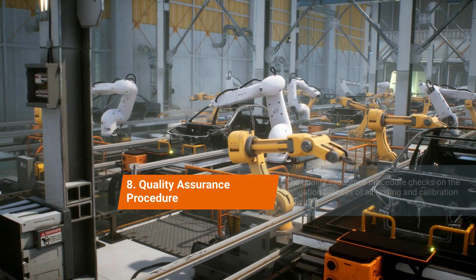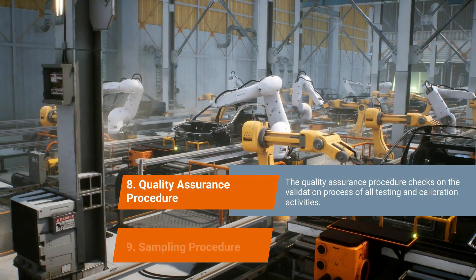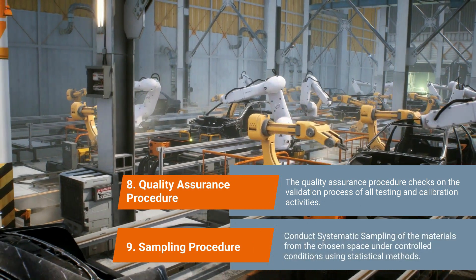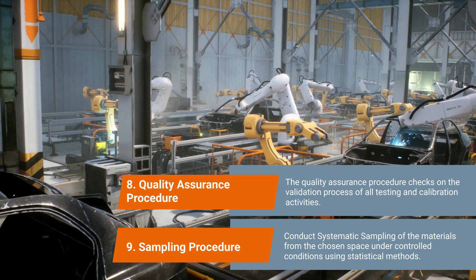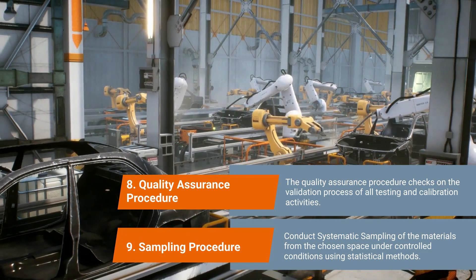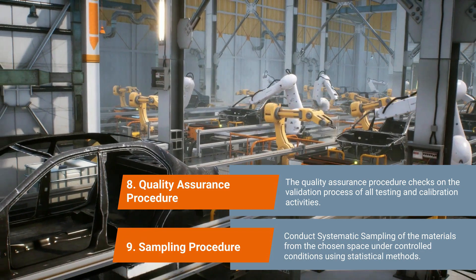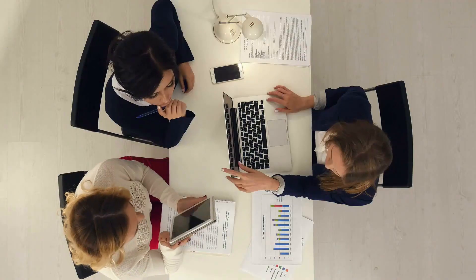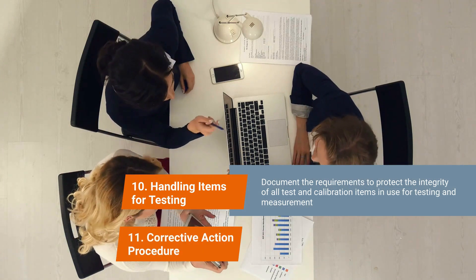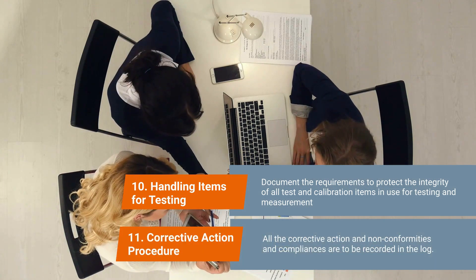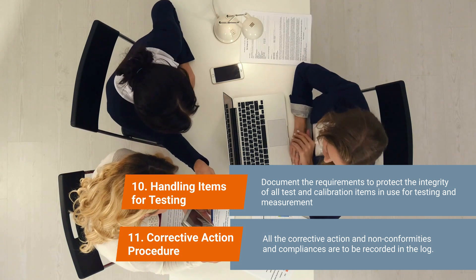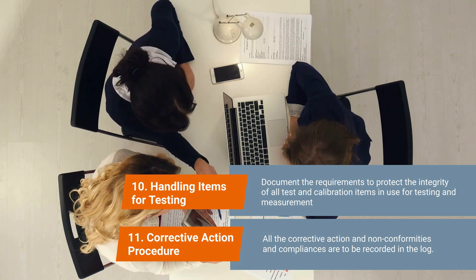The quality assurance procedure checks on the validation process of all testing and calibration activities. The ISO auditor must then conduct systematic sampling of the materials from the chosen space under controlled conditions using statistical methods. Document the requirements to protect the integrity of all tests and calibration items in use. Also, record all the corrective actions and non-conformities in the log for analysis.